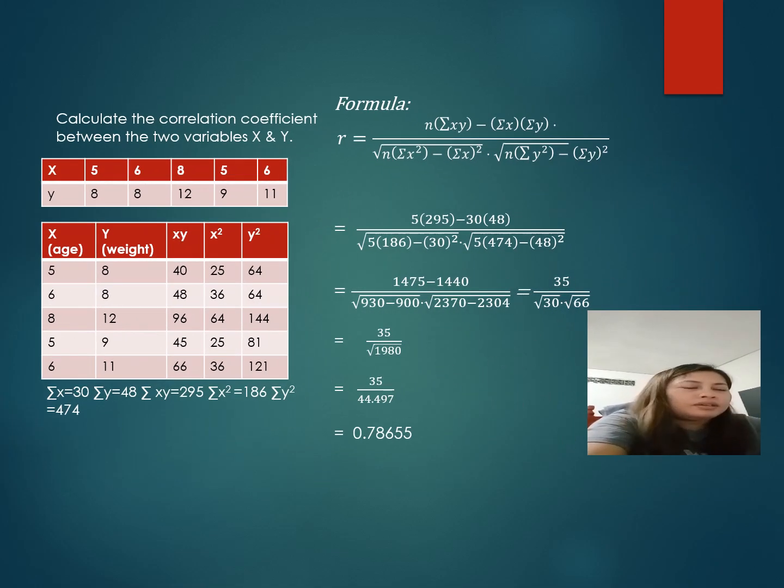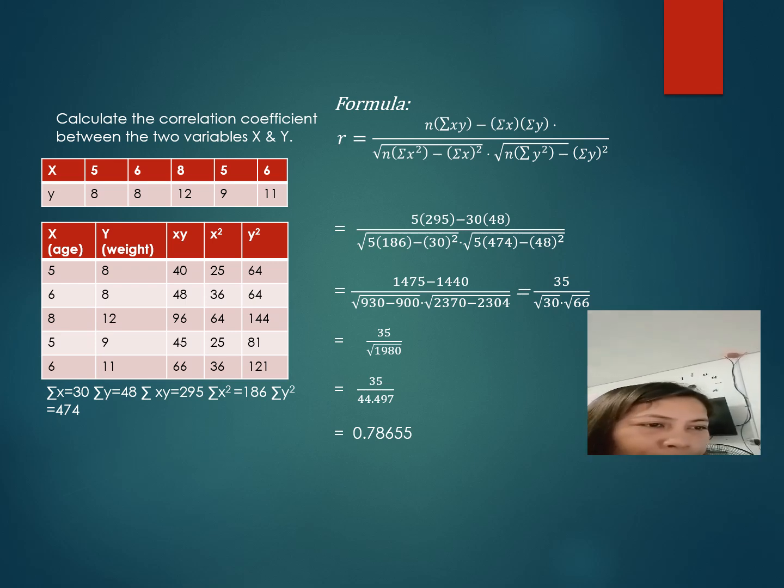Now we are going to calculate the correlation coefficient between the two variables x and y. Multiply x and y: 5 times 8 equals 40. Then 5 squared equals 25, and 8 squared equals 64.